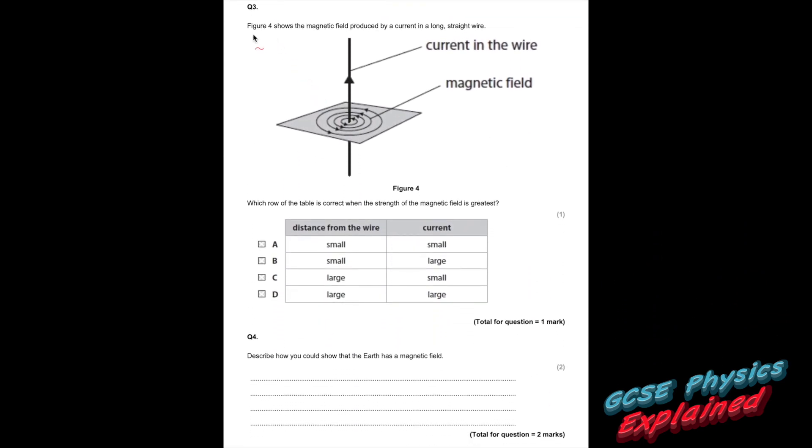Question 3. Figure 4 shows the magnetic field produced by a current in a long straight wire. Which row of the table is correct when the strength of the magnetic field is greatest? Well, the magnetic field is always greatest in the middle, especially when there's a strong current. So the distance from the wire wants to be small, so it's either A or B. And the current needs to be large. So it's B. You can tell how strong the magnetic field is by how close the lines are together. So you can see the lines here are close together, and over here the lines are not as close together.